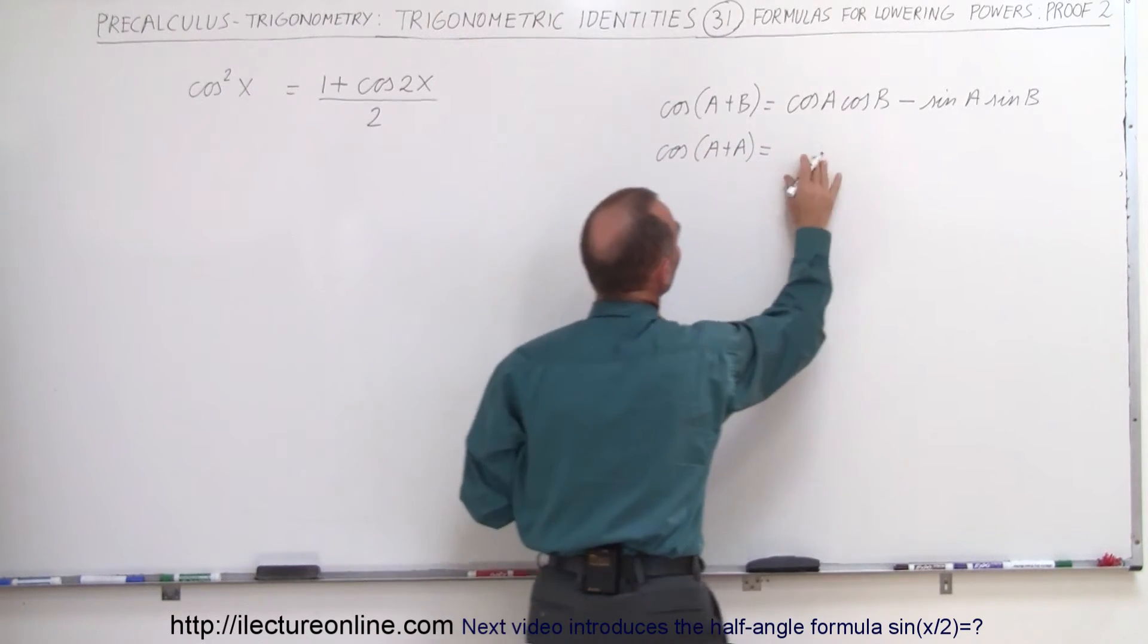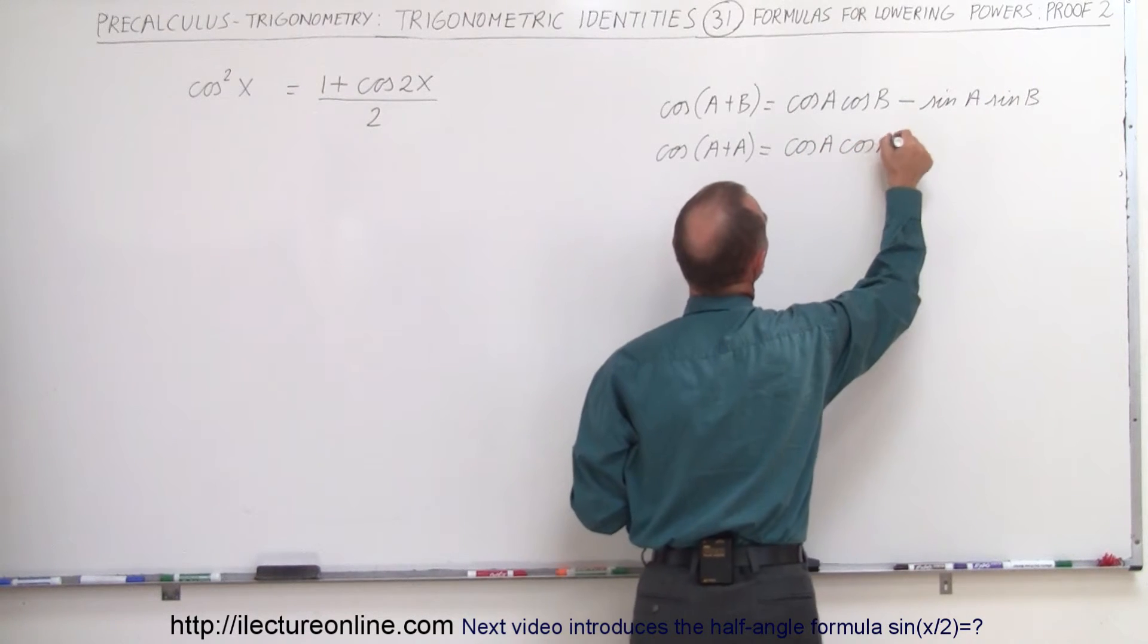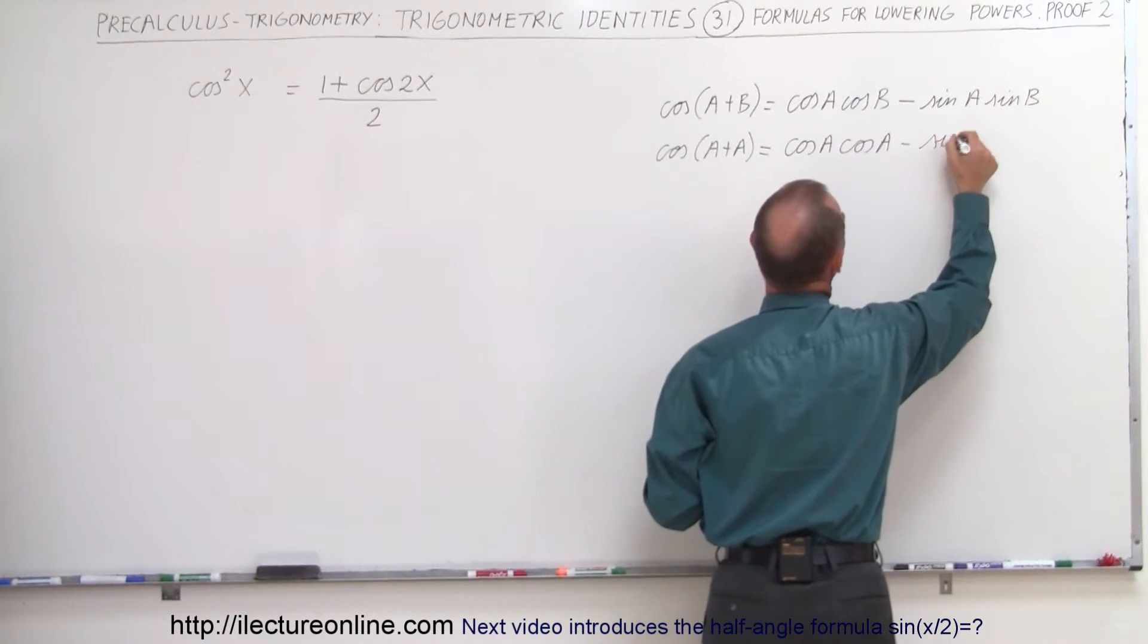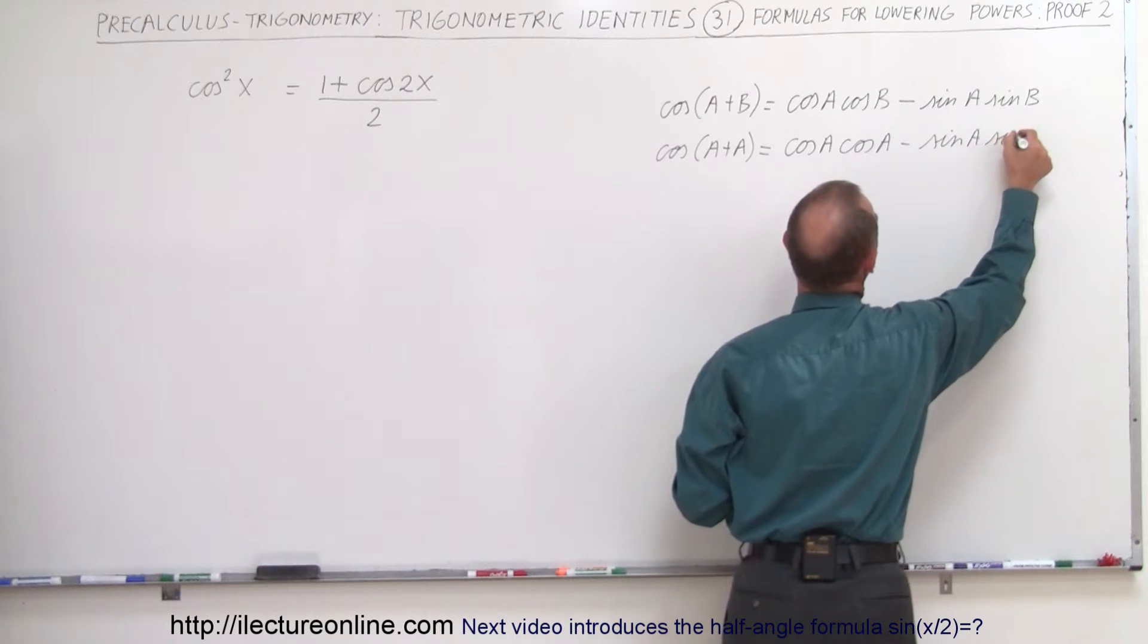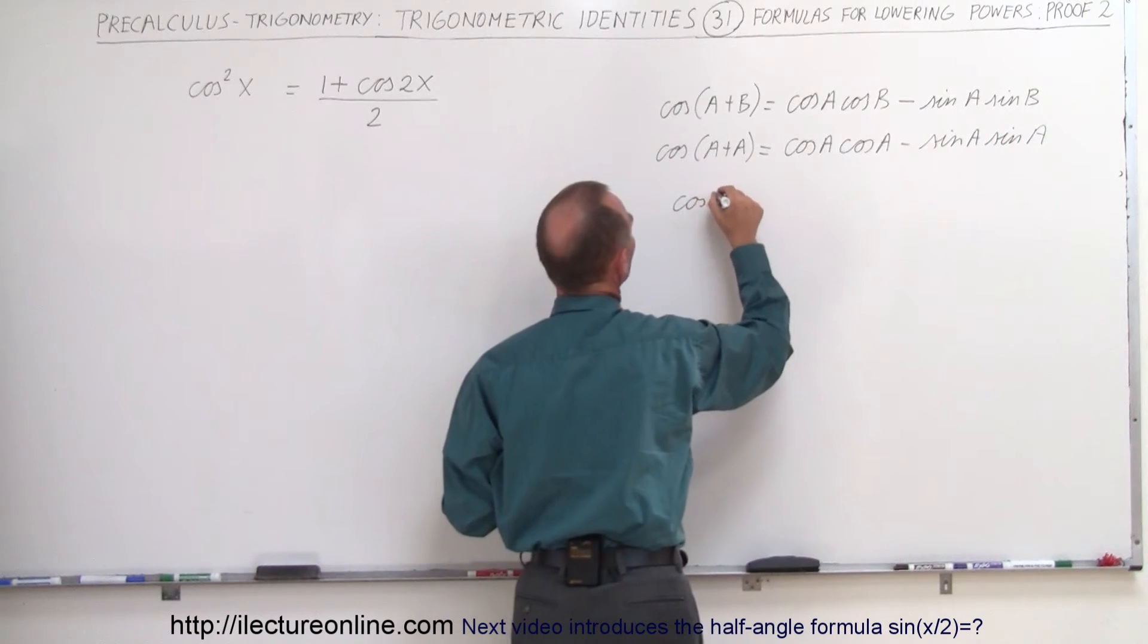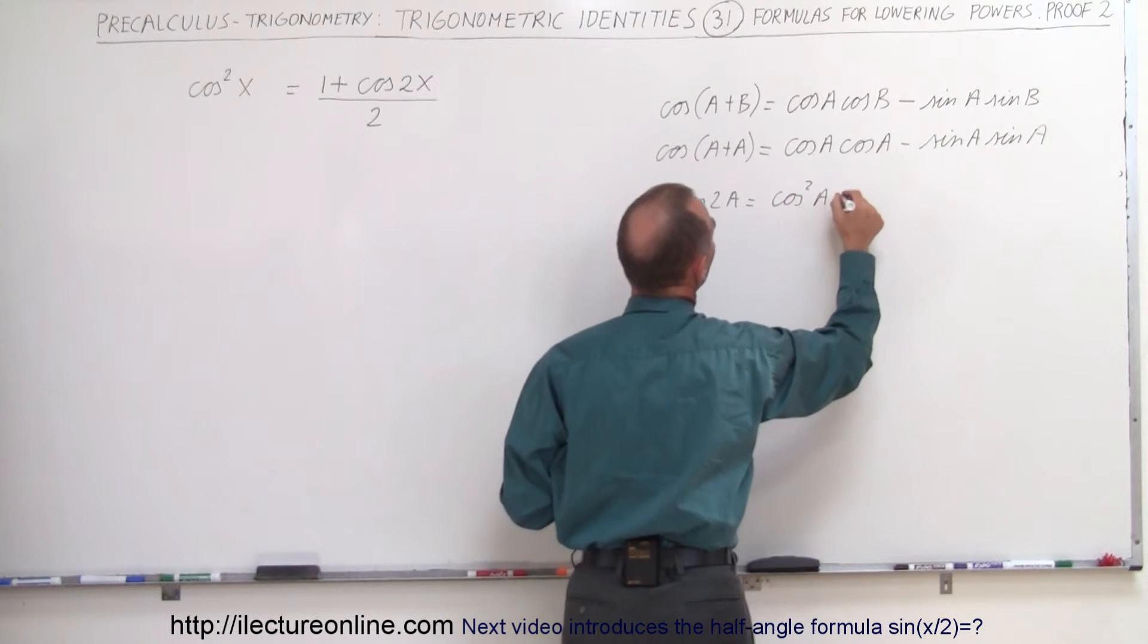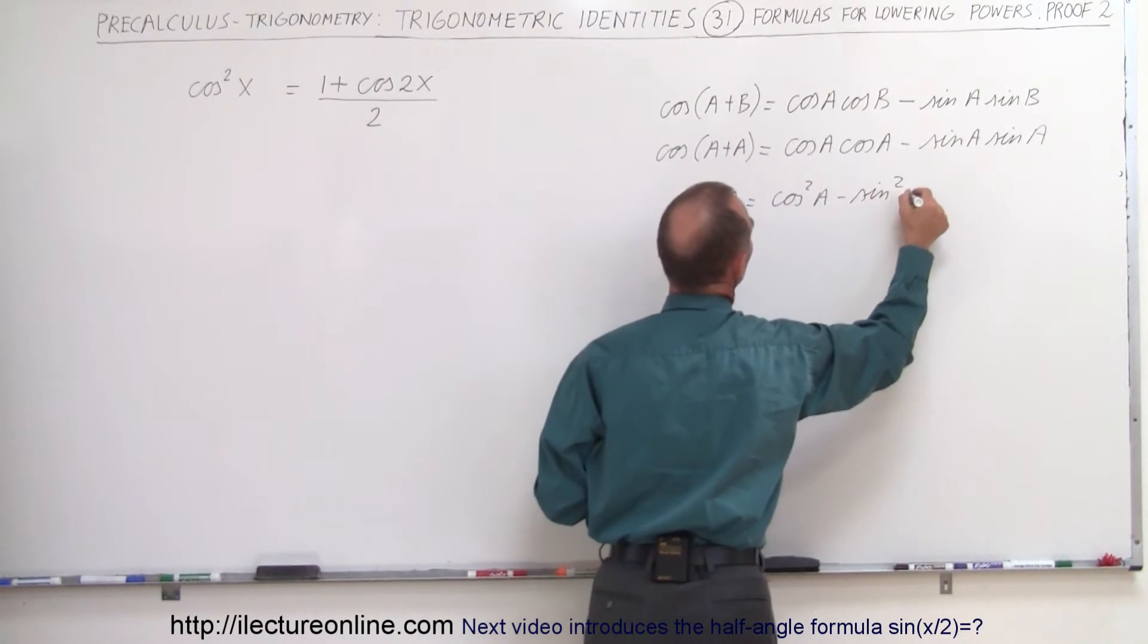We're going to change every b to an a and when we do that we get the cosine of a times the cosine of a minus the sine of a times the sine of a. And of course that simplifies to the cosine of 2a is equal to the cosine squared of a minus the sine squared of a.